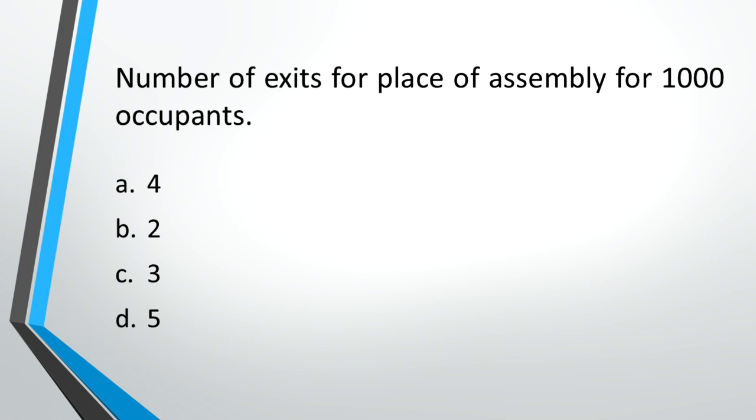Number of exits for place of assembly for 1,000 occupants. A: 4, B: 2, C: 3, D: 5. Answer: A, 4.